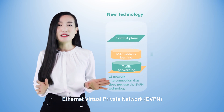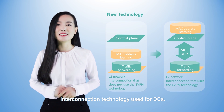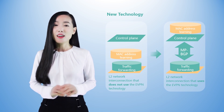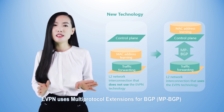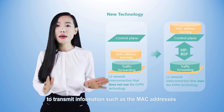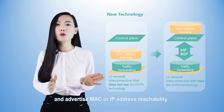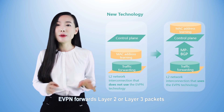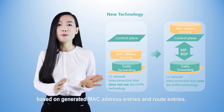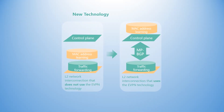Ethernet Virtual Private Network, eVPN, is the next generation layer-2 network interconnection technology used for DCs. eVPN uses multi-protocol extensions for BGP, MP-BGP, to transmit information such as the MAC addresses and IP addresses of network nodes, and advertises MAC or IP address reachability. eVPN forwards layer-2 or layer-3 packets based on generated MAC address entries and route entries, implementing DC interconnection.